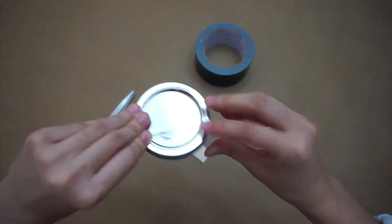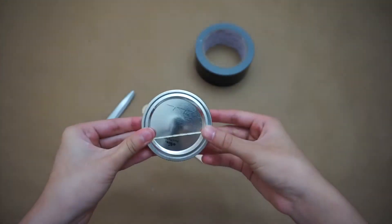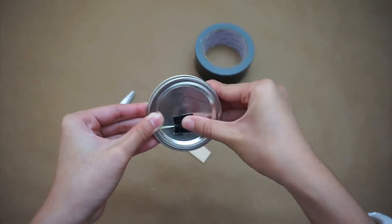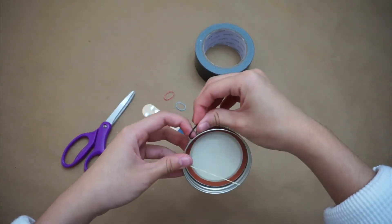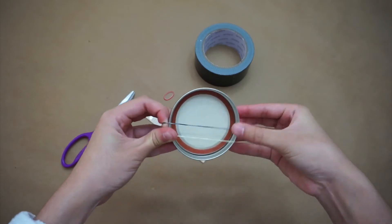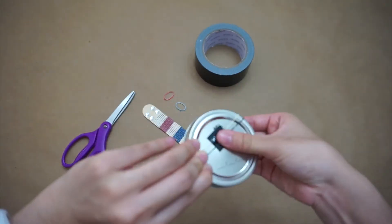Put the lid through it and secure it with the duct tape at the back of the lid. This part can be tricky and you may need an extra set of hands like I did.